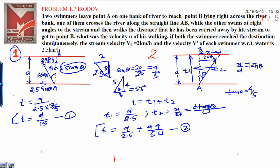You know both this time as well as this time will be equal because both start simultaneously and reach at point B. That is why I can write this t is equal to this t'. t' is equal to t.